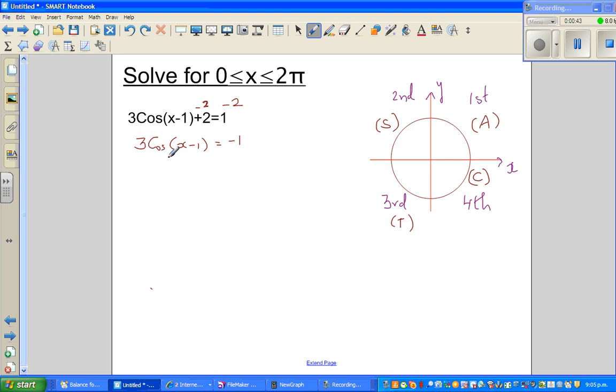So now dividing both sides by 3, so you get cos(x-1) = -1/3.